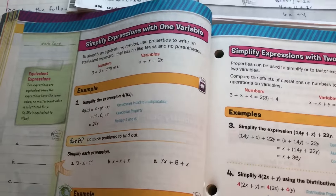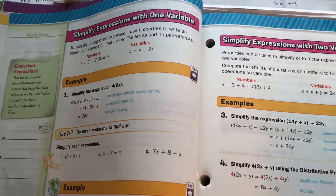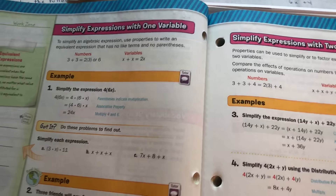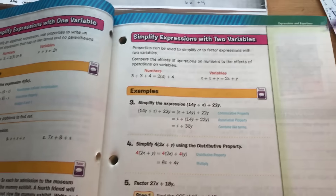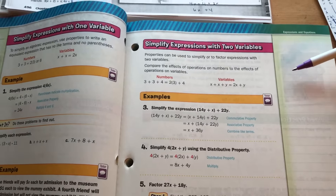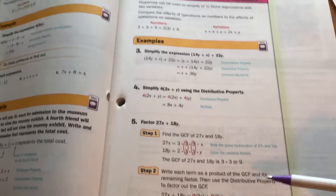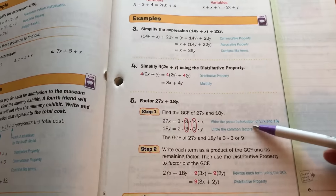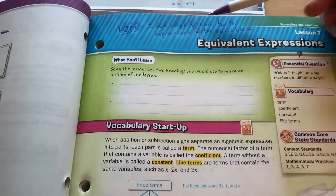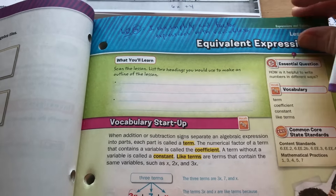On page 496, we're simplifying expressions with one variable. On page 497, we're simplifying expressions with two variables. We're going to be doing some factoring here too, which is why our learning objective says we're simplifying and factoring expressions with variables.